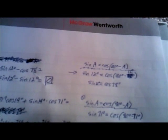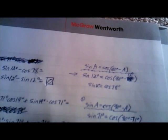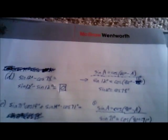Next one, we have sine of 12 degrees minus cosine of 78 degrees. Those add up to 90 degrees, so we're going to use the complementary angle theorem, which states that sine of angle A equals cosine of 90 degrees minus A. Sine of 12 degrees equals cosine of 90 minus 12 degrees, proving cosine of 78 equals sine of 12 and vice versa. So you get sine of 12 degrees minus sine of 12 degrees, which gives you 0.